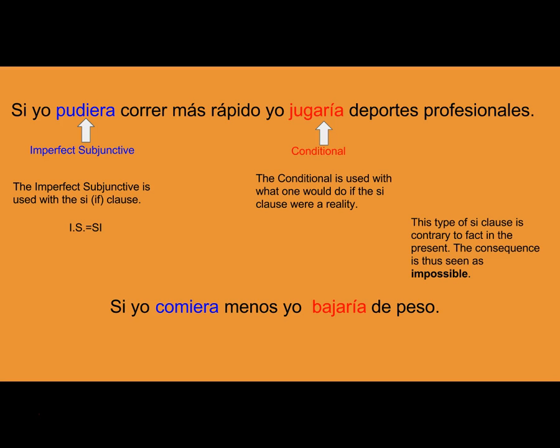It's really important to remember that the imperfect subjunctive is used with the SI clause. Because in English and in Spanish, I can say 'If I ate less, I would lose weight,' or 'I would lose weight if I ate less.' Students sometimes assume the imperfect subjunctive always comes first, but as we see here — yo bajaría de peso si yo comiera menos — our imperfect subjunctive, comiera, is at the end of the sentence. You need to keep the imperfect subjunctive with the SI clause of the sentence, no matter where it may be.